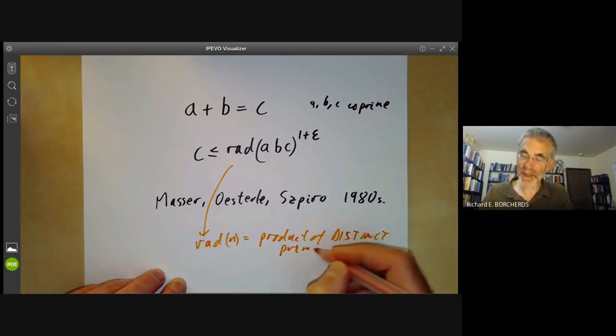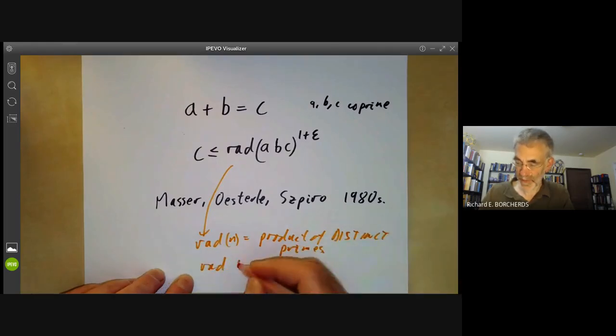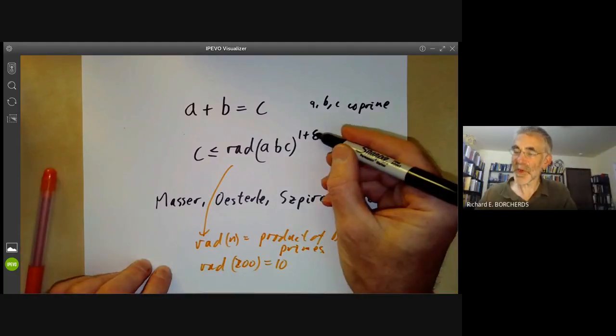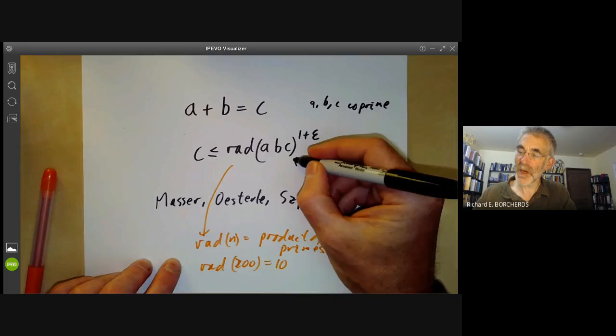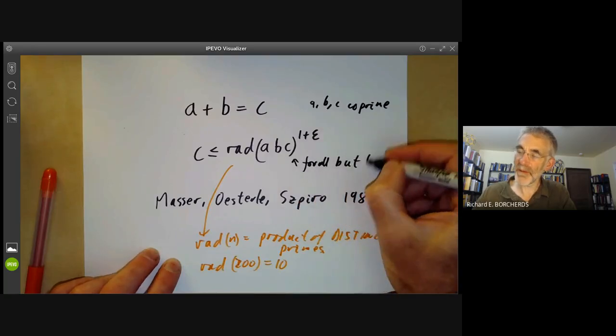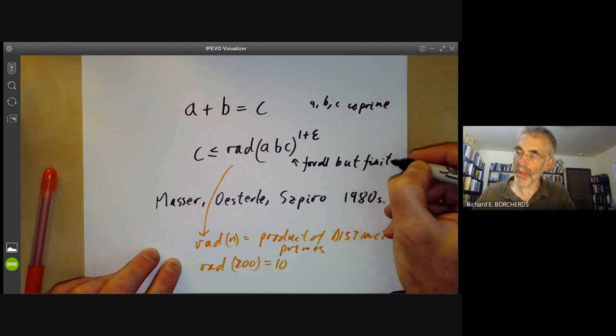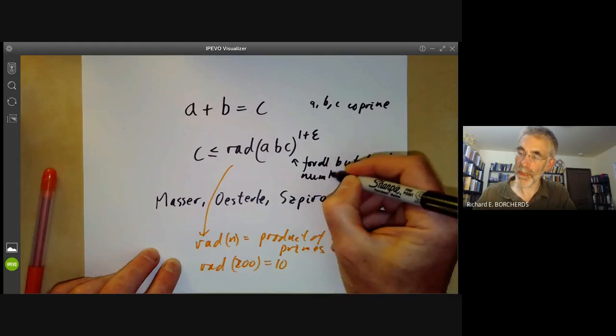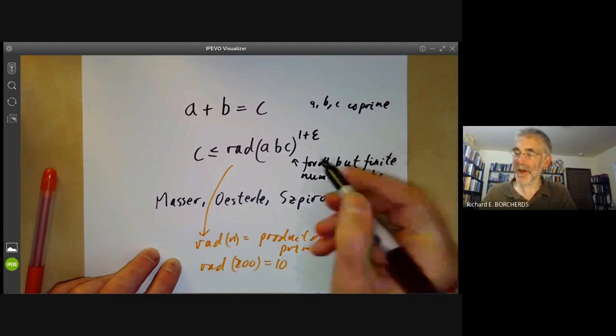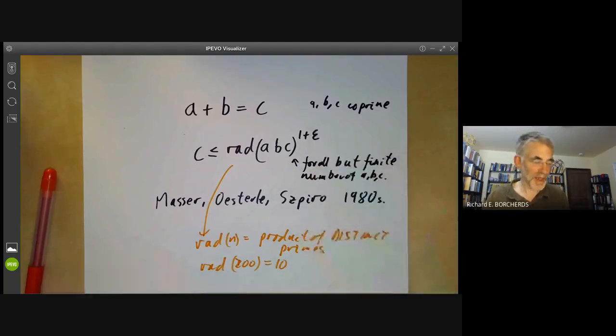For instance the radical of 200 is 10 because 200's prime factors are 2 and 5, and epsilon is some rather small positive number and this holds for all but a finite number of integers ABC where this finite number depends on what this number epsilon is.